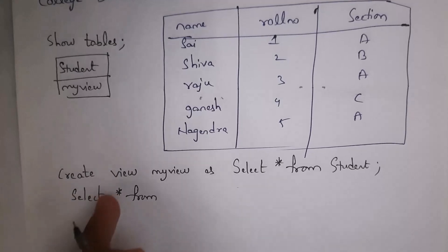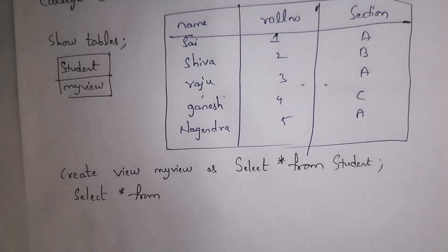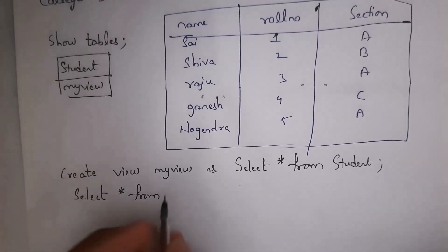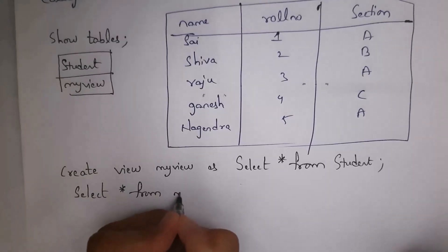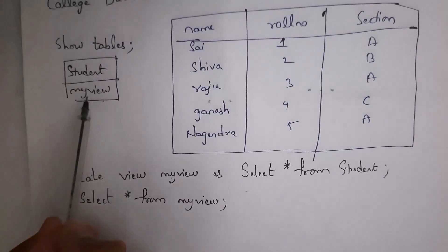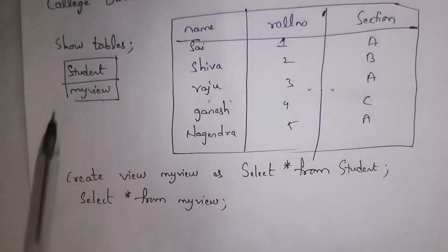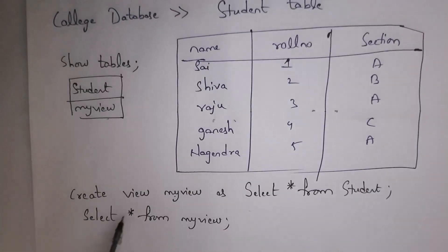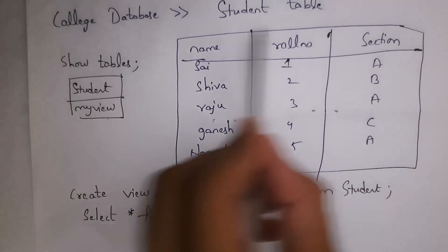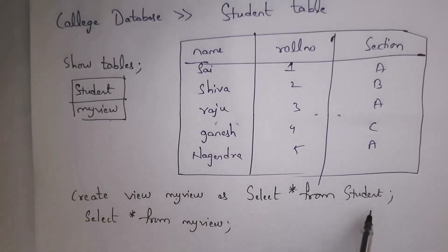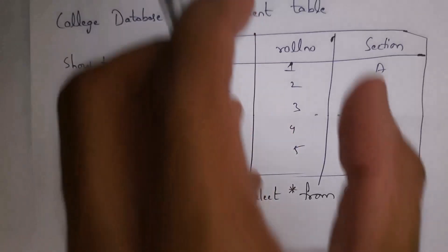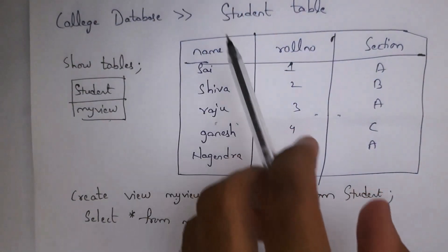To see data present in a table you write SELECT * FROM table_name, and to see data in a view you write SELECT * FROM view_name. Write: SELECT * FROM my_view. This will display the complete table — the same data as the student table. SELECT * FROM student selects all data from all three columns.